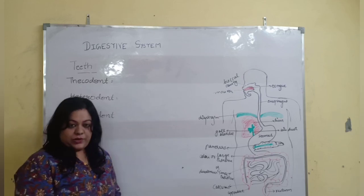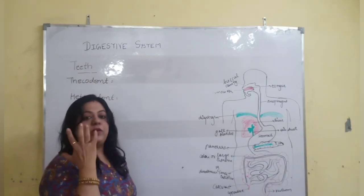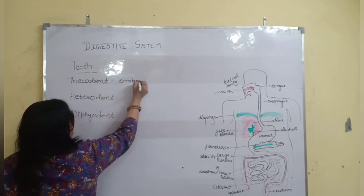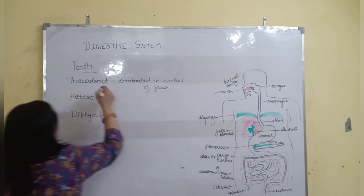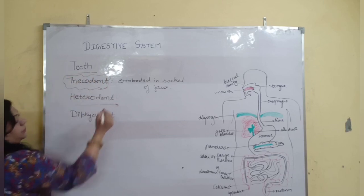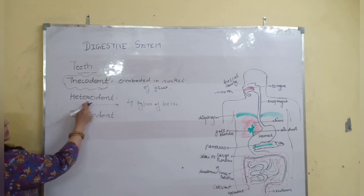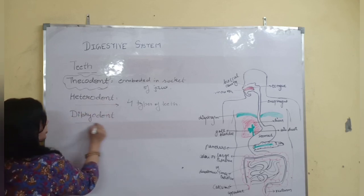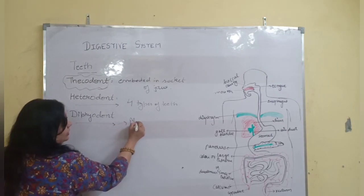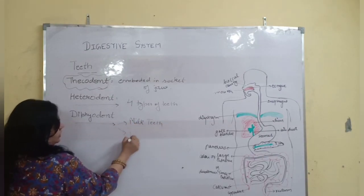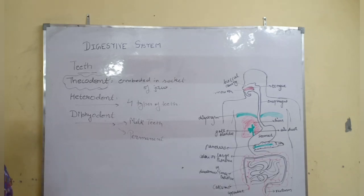Teeth are hard structures meant for cutting, chewing, and crushing of food. Teeth are partially embedded in the socket of the jaw — that condition is known as thecodont. Four types of teeth are present in human beings, and that condition is known as heterodont. Teeth are also present in two stages of life: milk teeth and permanent teeth — that condition is known as diphyodont.